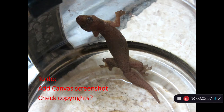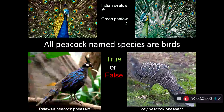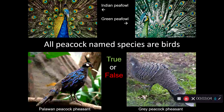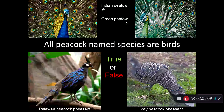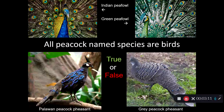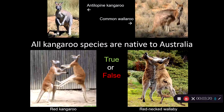Let's just try a little quiz, and let's start easy with a true or false. All peacock named species are birds. All kangaroo species are native to Australia.